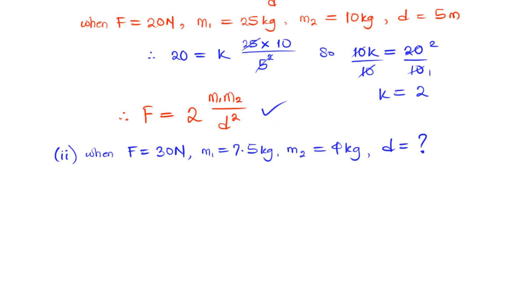If you put in all the values, we have 30 is equal to 2 multiplied by M1, 7.5, M2, 4, over D raised to power 2. If we cross multiply the expressions, we have D raised to power 2 is equal to 2 times 7.5 times 4 divided by 30.